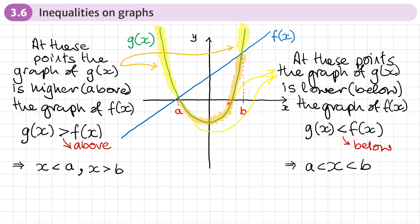At the other highlighted points, the graph of g(x) is lower or below the graph of f(x). Written as an inequality, g(x) < f(x) — think of 'less than' as being below. If we solve that inequality, g(x) is below f(x) between the x-values of a and b, so x is greater than a and less than b — it's between these two values.